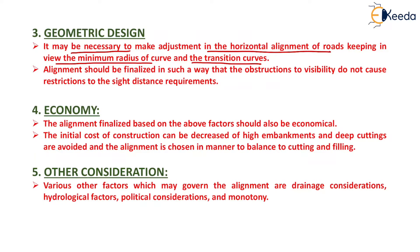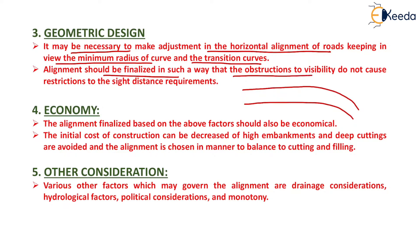While deciding a geometric design, we need to make adjustments in the horizontal alignment so that the radius of the curve is minimum, allowing for a gradual transition of the alignment. The alignment should be finalized in such a way that obstructions to visibility do not cause restriction to the sight distance requirement.